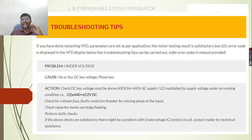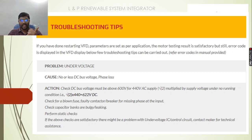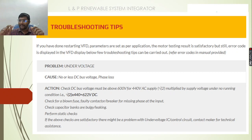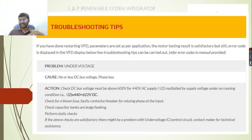Next, if we have an undervoltage problem, what will be the cause? There will be less DC bus voltage or a possibility of phase loss. The first thing to check is the DC bus voltage. For example, for 440-volt conditions, check whether any fuses have blown and check for faulty contacts or a breaker with a missing phase at the input. Check the capacitor banks — whether they are bulging or leaking. After performing all these static checks, if the problem still exists, it is better to contact the technical persons.